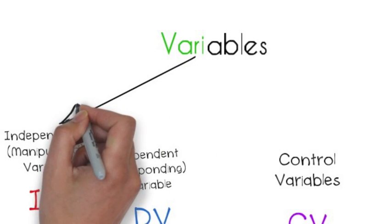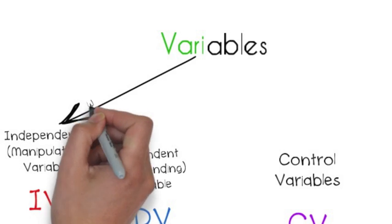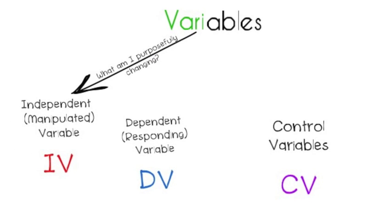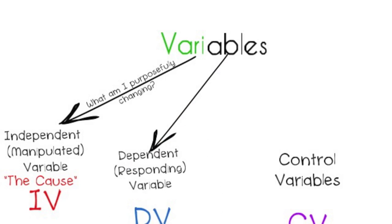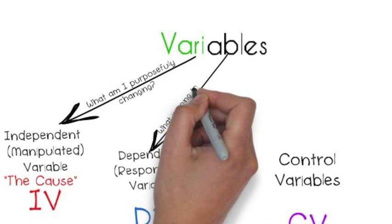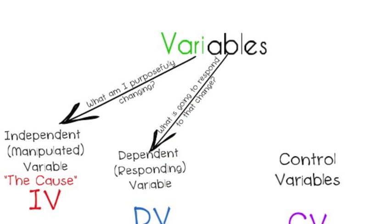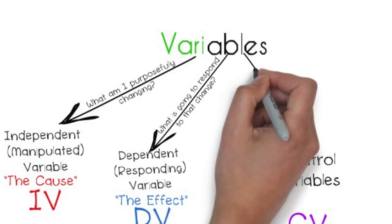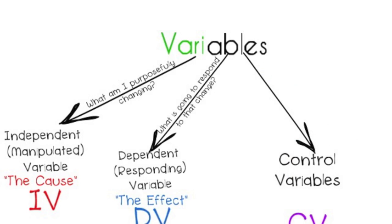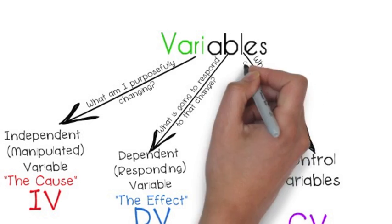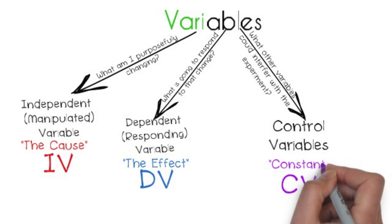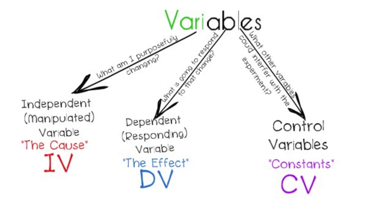If you want to know what the independent variable is, ask yourself: what am I purposefully changing in my experiment? What is the cause going to be? In our runner example, the cause was the runner. There has to be an effect, so when you want to figure out the dependent variable, ask yourself what's going to respond to that change — what is the effect? Different runners will cause different times. The control variable is something that is not the independent or dependent variable; it's something that could interfere with the experiment, so it needs to be held constant.